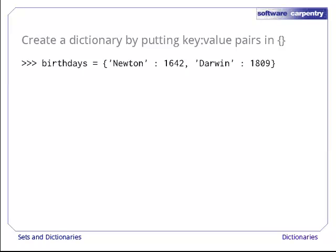The dictionary has two keys, which are the strings Newton and Darwin. The value associated with Newton is 1642, while the value associated with Darwin is 1809.